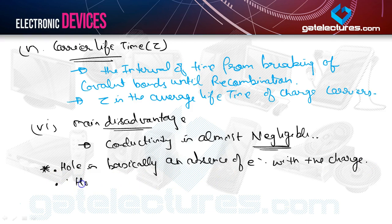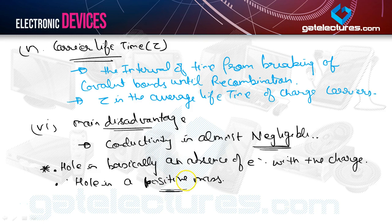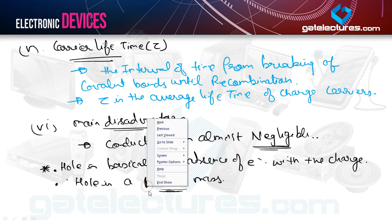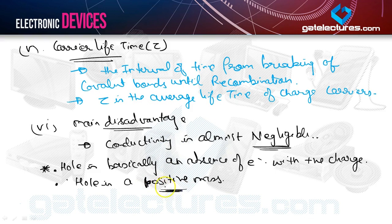A hole has a positive mass. There had been a question asked in the GATE examination before — an MCQ — where it was asked about properties of the hole. It is important to note that the hole has a positive mass.